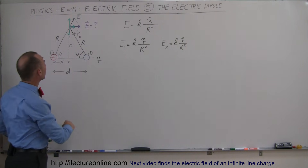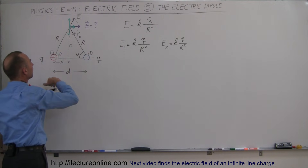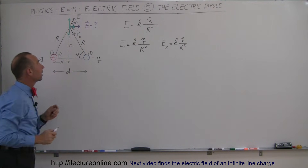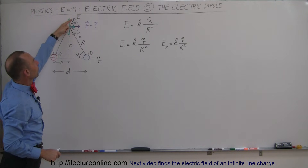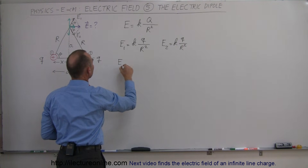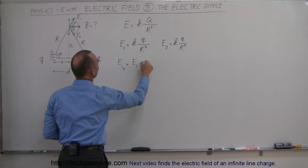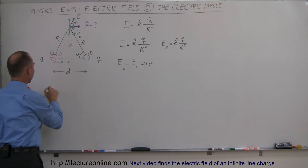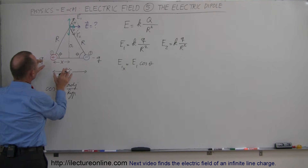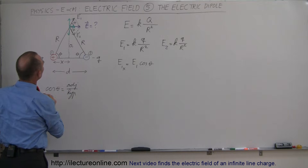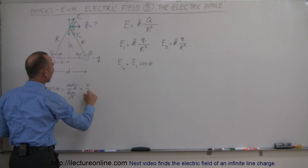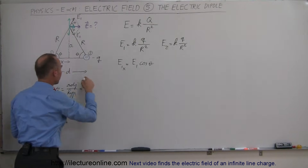To find the horizontal component of E1 and E2, assume the angle is theta. Then the horizontal component is the magnitude of E1 times cosine of theta, so E1x = E1·cos(θ). The cosine of an angle is the adjacent side divided by the hypotenuse, so cos(θ) = x/r, meaning we can replace cosine of theta with x over r.